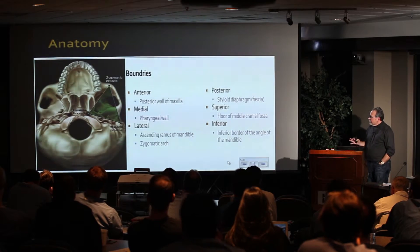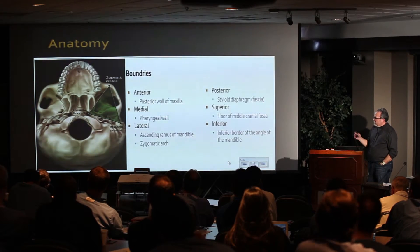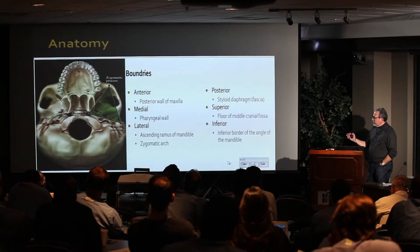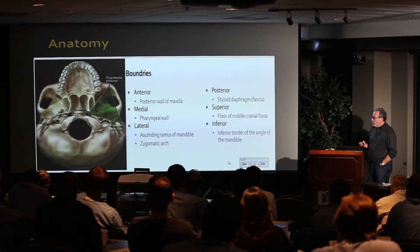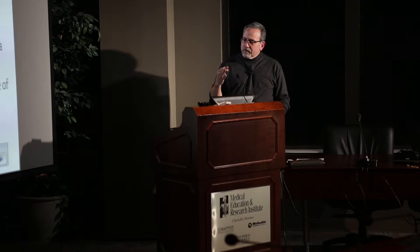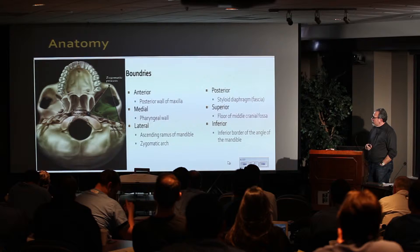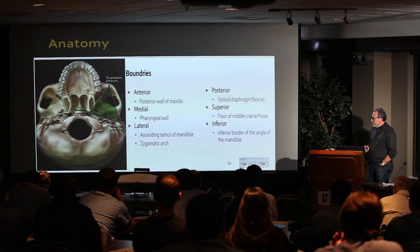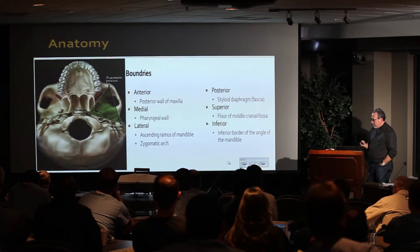The infratemporal fossa has definable boundaries. The anterior boundary is the posterior wall of the maxilla. The medial boundary is the pharyngeal wall. Laterally, it's the descending ramus of the mandible and the zygomatic arch. Posteriorly, the styloid diaphragm, which separates the infratemporal fossa from the carotid space. Superiorly, it's the floor of the middle cranial fossa, and inferiorly, a line drawn through the inferior border of the angle of the mandible.